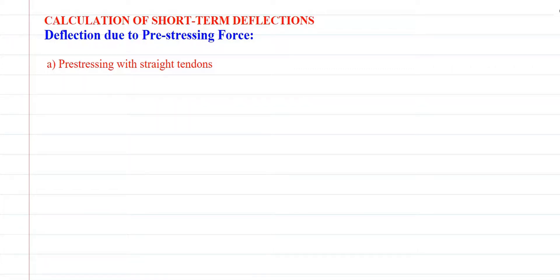Welcome back, students. Last class we covered the basics of the moment area method and how to calculate deflection using the moment area method for a gravity load. Now we are going to see the deflection due to pre-stressing forces — for different types of tendons or different profiles of tendons, how the deflection is actually calculated. The first case we will look at is pre-stressing with a straight tendon.